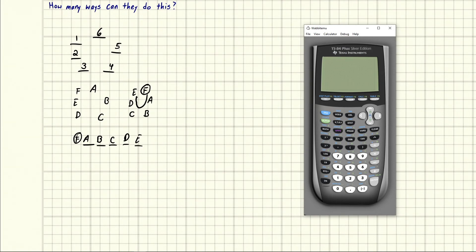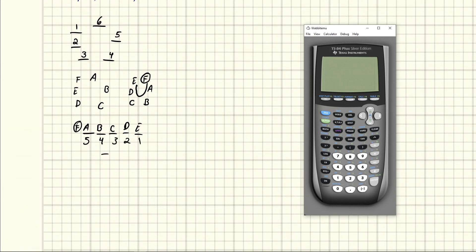So any one of these five people could have been in this spot where A is at right now. So five would be there. And then we'd have four people left, three people left, two people left, one person left. So the answer would actually be five factorial.